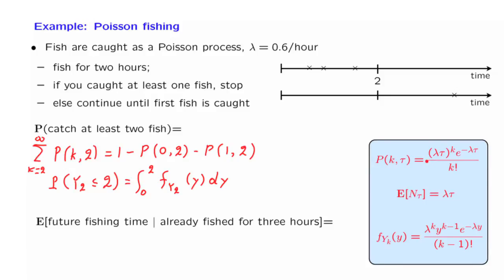The next question: suppose you have already fished for three hours — which can only happen under the second scenario, meaning no fish were caught until time 3. Given this event, what is the expected value of the future fishing time until a fish is caught? The Poisson process starts fresh at time 3. No matter what happened in the past, looking into the future from time 3 you have a fresh Poisson process. The time until the first arrival has an exponential distribution with parameter λ, and its expected value is 1/λ.